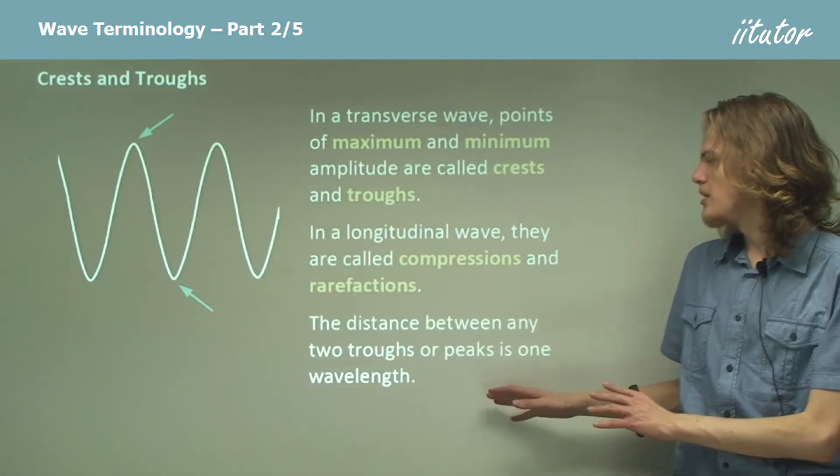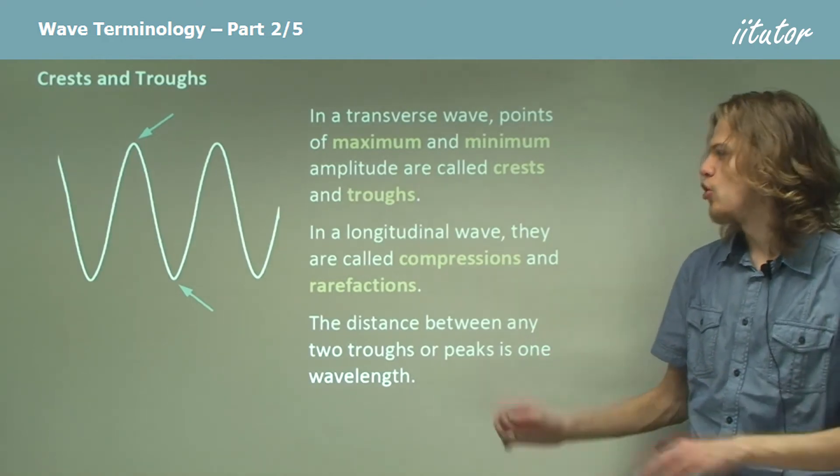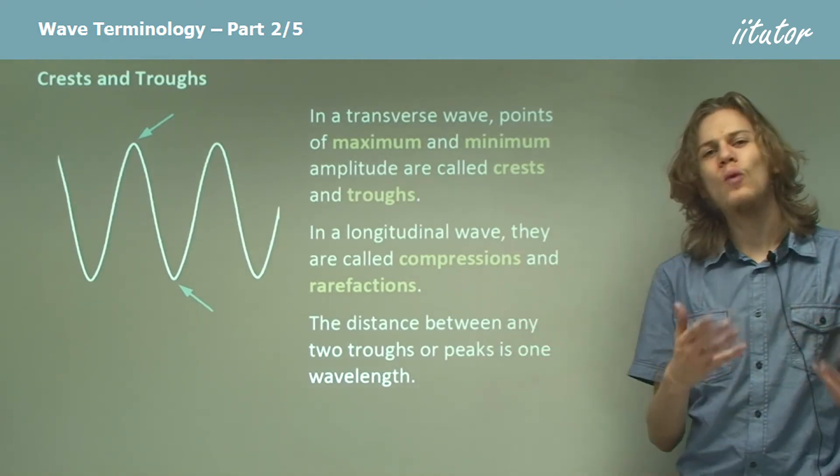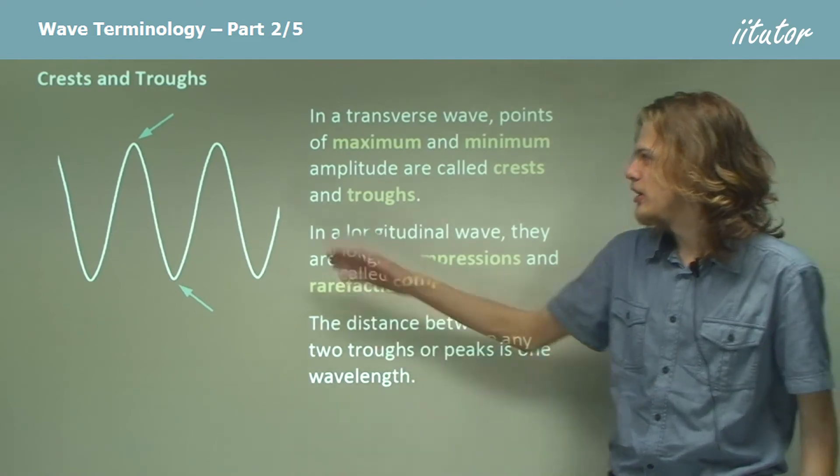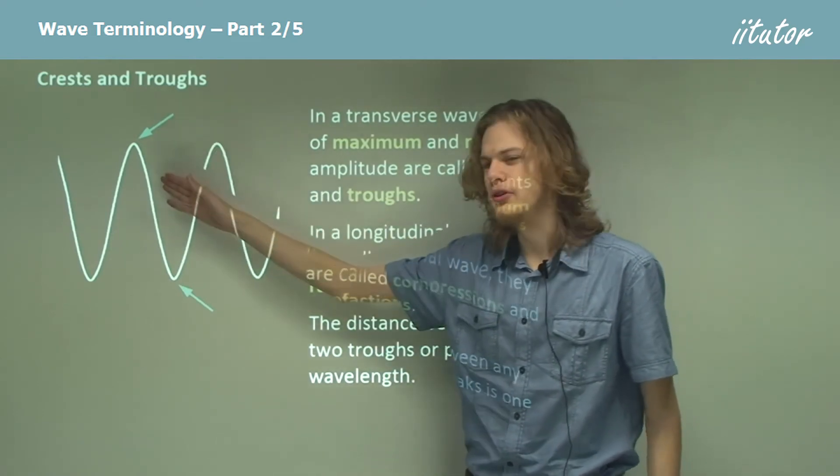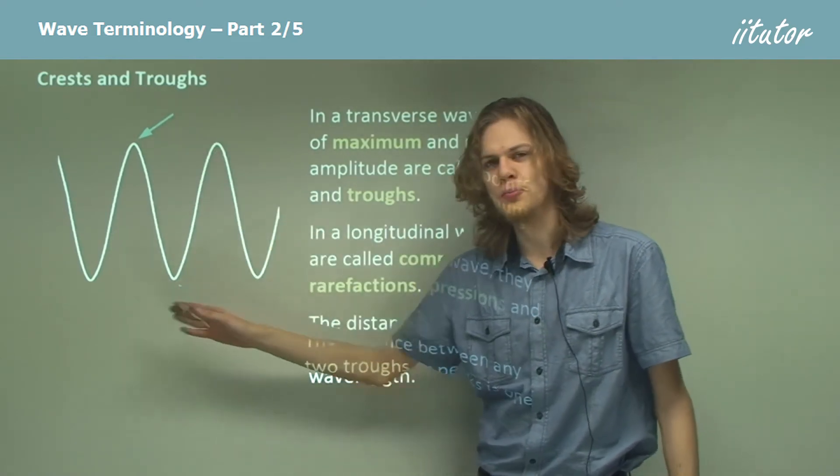So the distance between any two troughs or peaks or compressions or rarefactions will be the wavelength, because each crest is identical to the previous crest and each trough is identical to the previous trough.